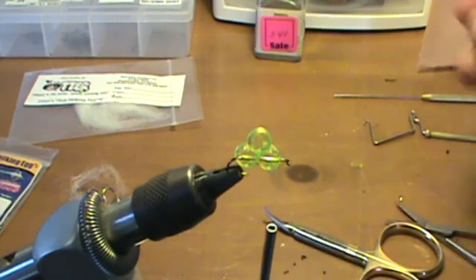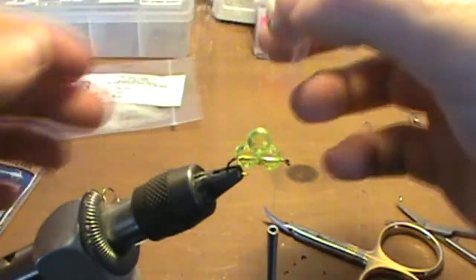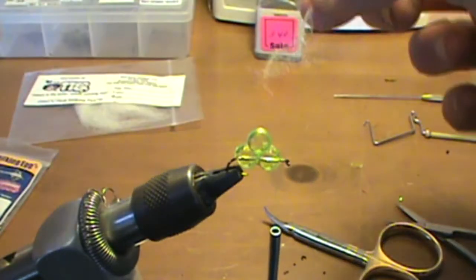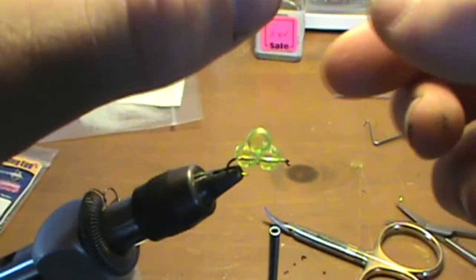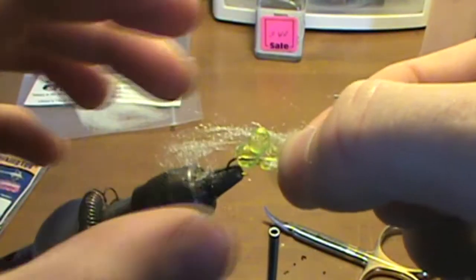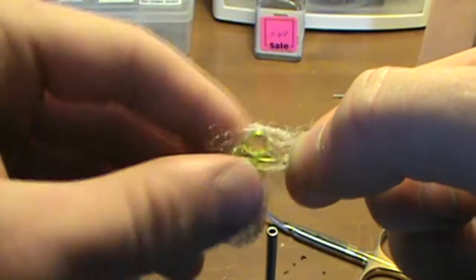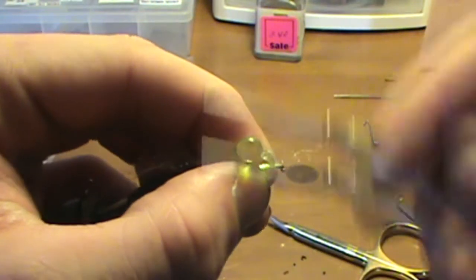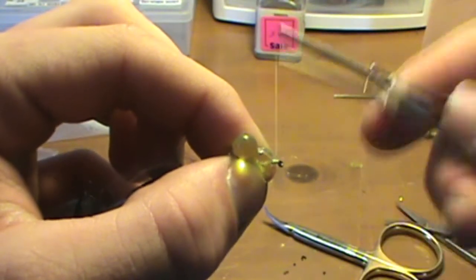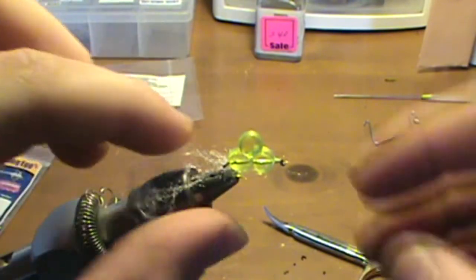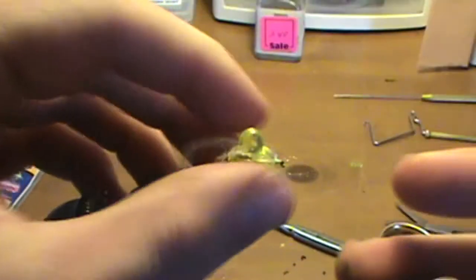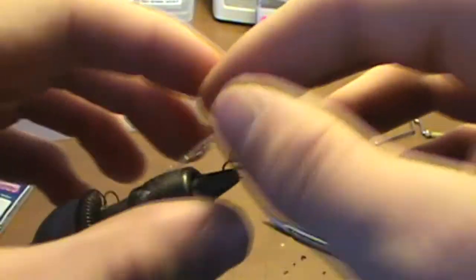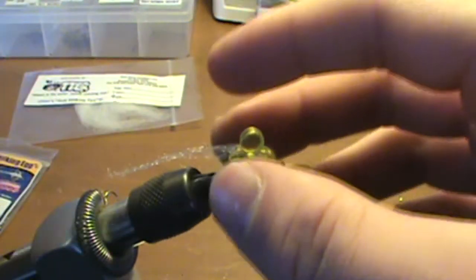Next you're going to take your soft egg milking material and you'll have a strip like that. You're just going to pinch it in the middle and lay it on top of the fly. Put half on one side, half on the other, and bring it down into the front. Then just tie it on up front. You'll have all this soft egg material here. Now you're just going to bring it back and get it around the eggs.